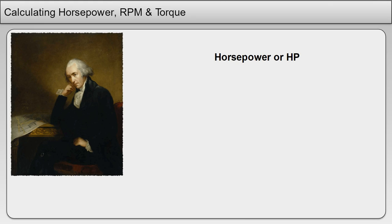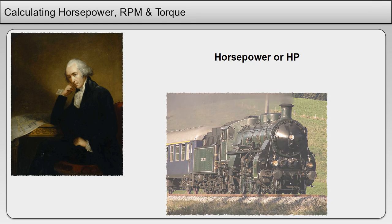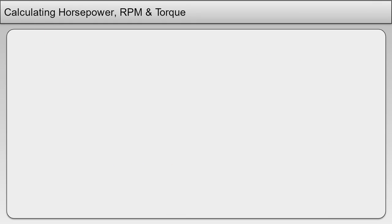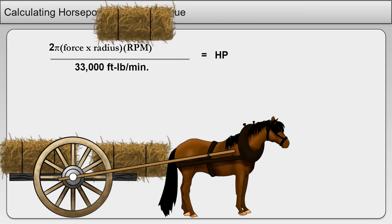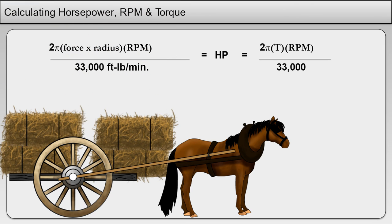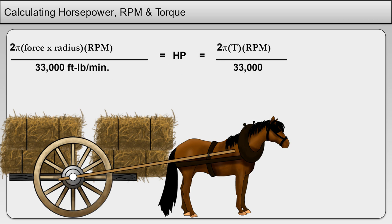Horsepower was devised by James Watt as a standard for comparing the power of his early steam engines. He found that the average horse could pull 330 pounds a distance of 100 feet in one minute, which equals 33,000 foot-pounds per minute. In electrical terms, one horsepower is equal to 746 watts.